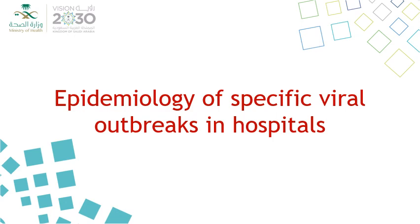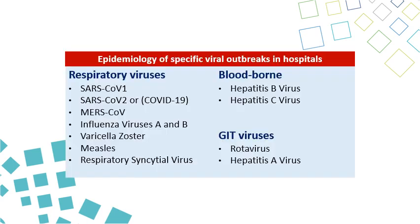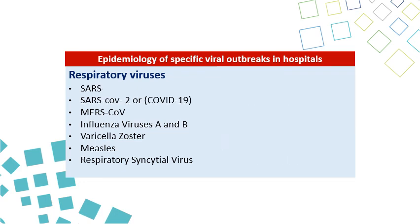We will talk today about the epidemiology of specific viral outbreaks in hospital settings. There are three groups of viruses, including the major group respiratory viruses, but also bloodborne viruses and GIT viruses. For the respiratory viruses, we will talk about SARS-CoV-1, SARS-CoV-2 (COVID), MERS-CoV, influenza A and B, varicella zoster, measles, and respiratory syncytial virus. For bloodborne, hepatitis B and C. For GIT, rotavirus and hepatitis A virus. We will start with the first group: respiratory viruses.